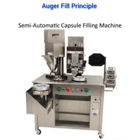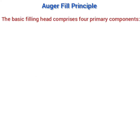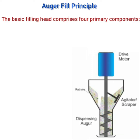The first principle is the auger fill principle. This is a semi-automatic capsule filling machine. This is the filling head in which the material to be filled is kept, and this is the filling ring in which the empty capsules are placed. The filling head primarily comprises four primary components. The first is the auger — it looks like a screw, as you can see in this image. This auger is rotated by the motor drive, and the agitation blade will mix the material which is to be filled in the capsule.